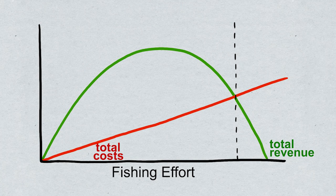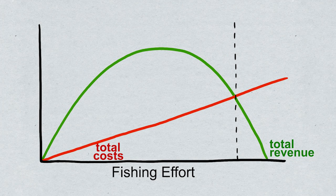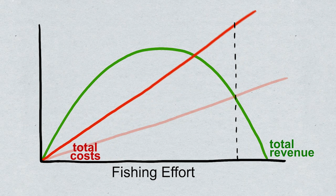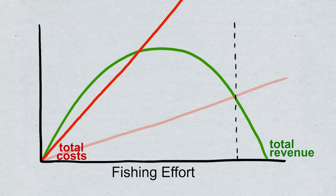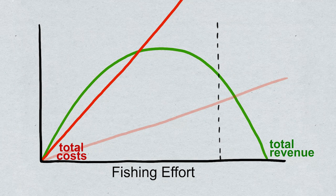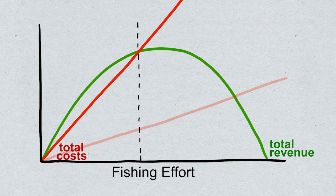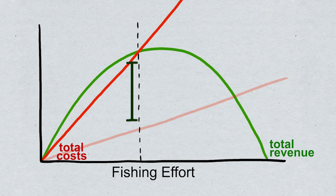If a subsidy increases the amount of effort, could the government use a tax to have the opposite effect and lower the amount of effort? Let's say they add a tax to fuel, which is going to increase the cost of each unit of effort. It's still open access, so they still fish until total revenue equals total costs, this point here. But this is better, the effort is reduced so the population is more healthy and more rent is generated.